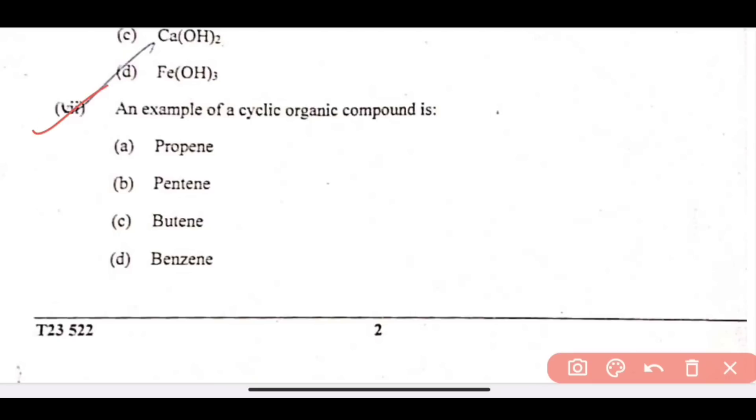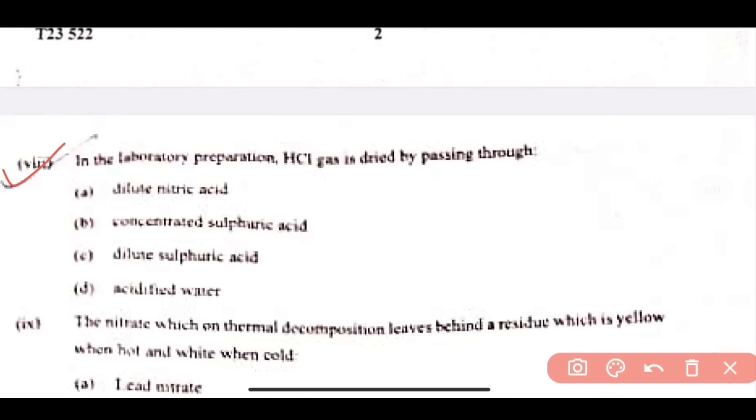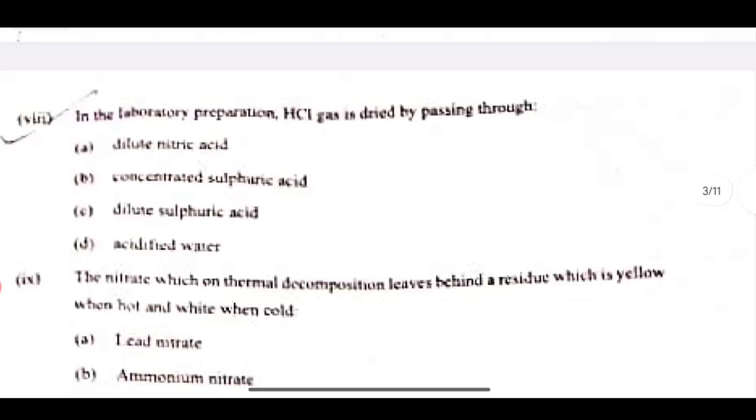Next is question number 7, cyclic organic compound, benzene ring, so option number D is correct. Next is question number 8, in the lab preparation, HCL gas is dried by passing through. So how does HCL gas dry happen, we have discussed this in MCQs yesterday. It is dried using concentrated sulfuric acid, option number B correct.